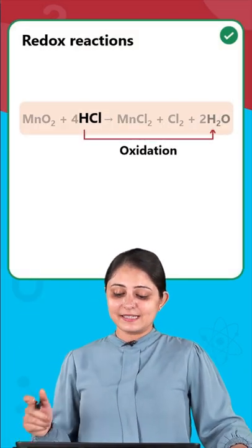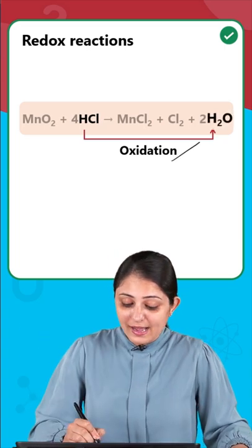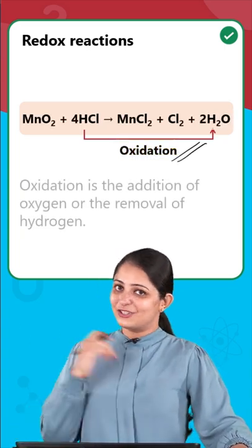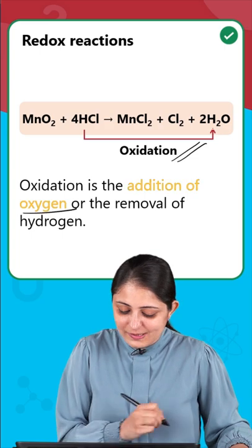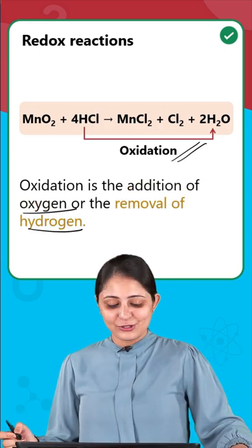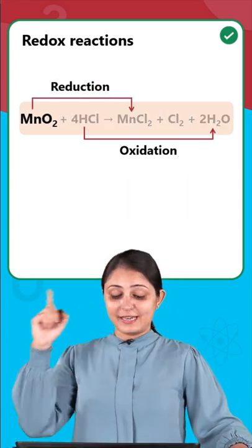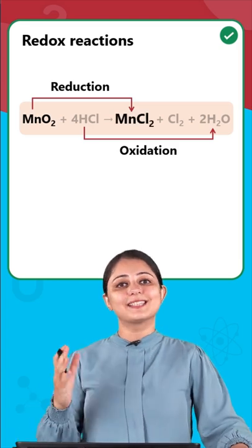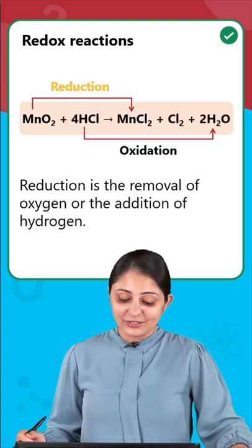In this, HCl is getting converted to H2O and the process is oxidation. In general, oxidation means addition of oxygen or removal of hydrogen. Also, we see MnO2 getting converted to MnCl2 and this process is reduction. Now reduction is the removal of oxygen or addition of hydrogen.